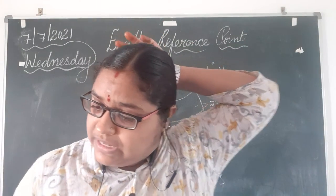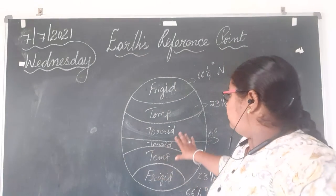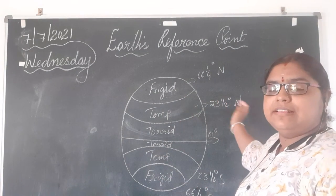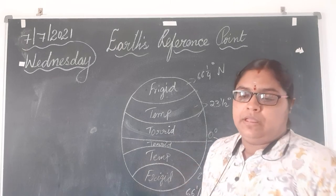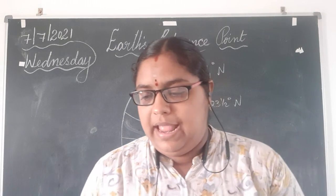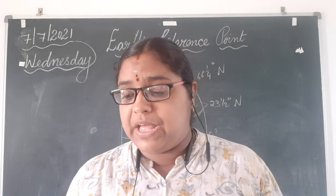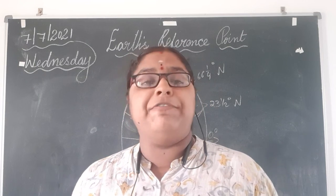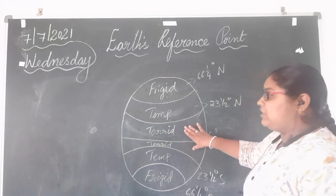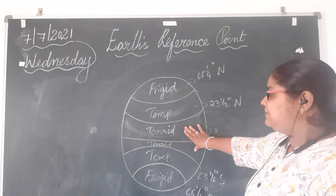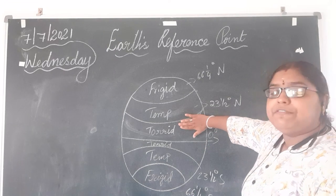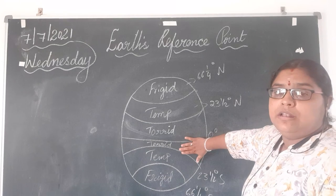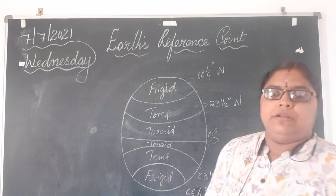The Torrid Zone is the hottest zone on which the sun's rays fall directly. It extends from the Tropic of Cancer in the north to the Tropic of Capricorn in the south.